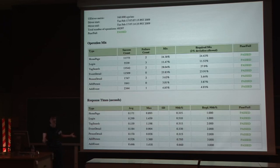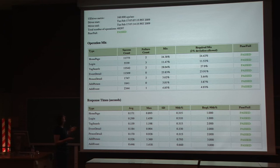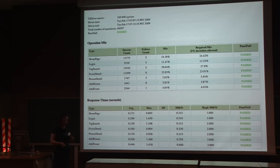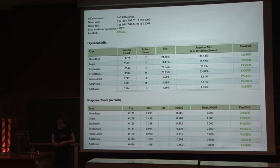The best way to introduce Fabron is really to show you some of what it does and what it gives you. This is a typical Fabron benchmark run. You'll see at the top here we have information such as the operations per second for this run, the number of operations that were run, and whether it passed or failed. Beneath that you have several tables. An important concept in Fabron is the operation — I'll mention operations quite frequently.